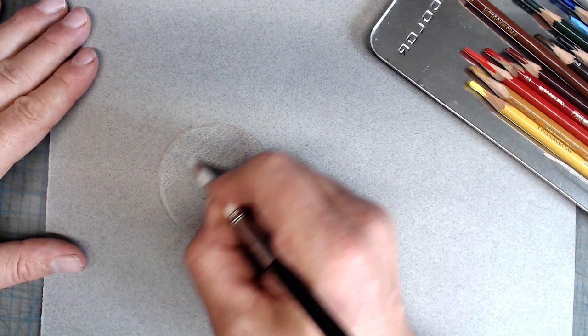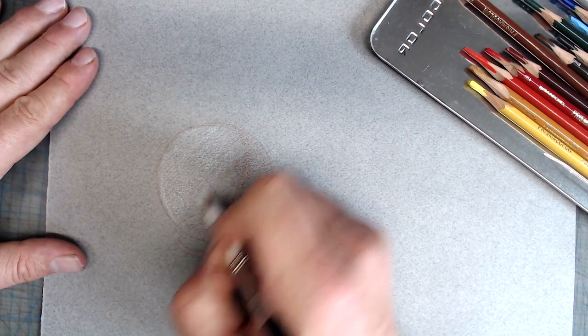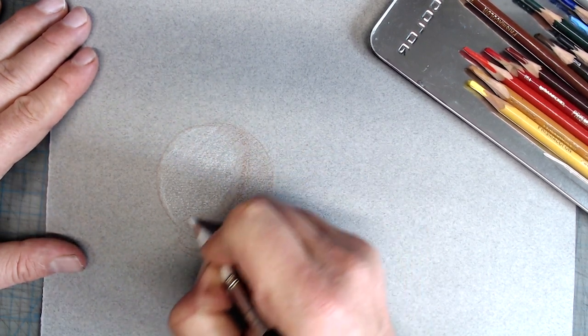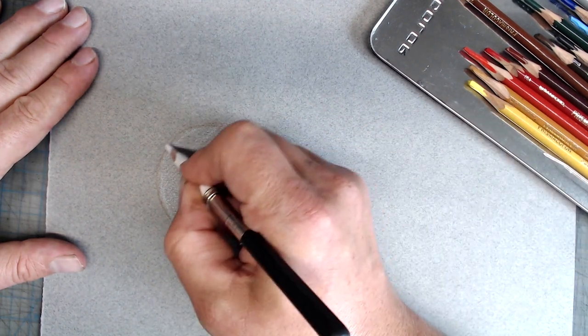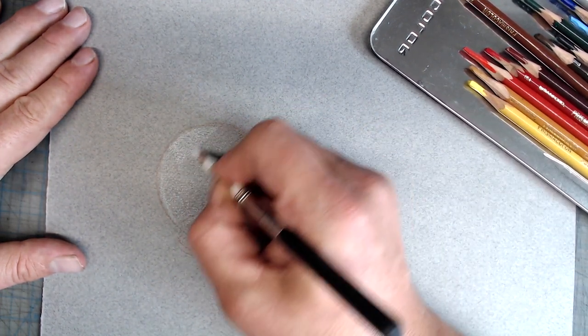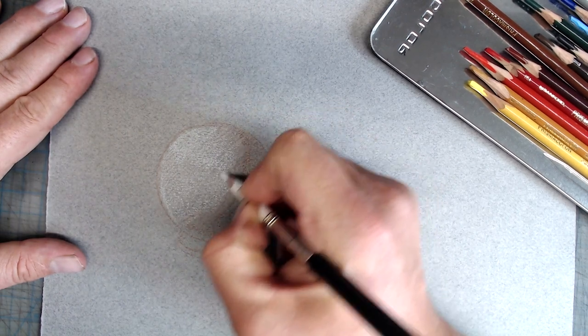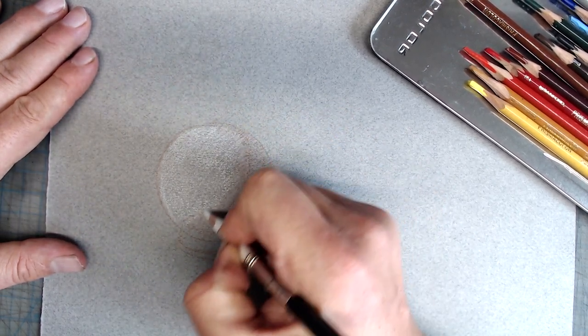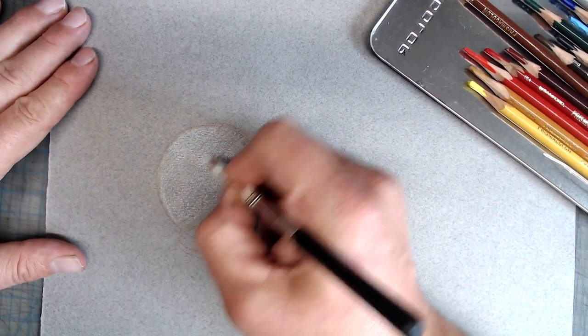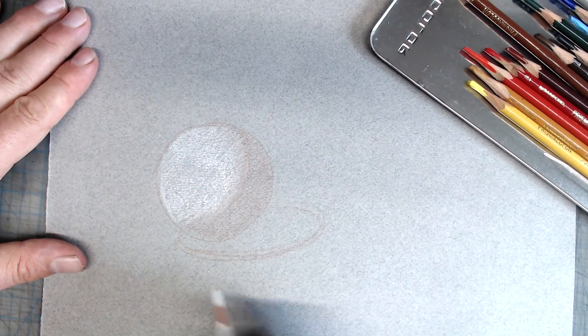The white pencil will serve two purposes in my drawing. It'll be used to lighten values, and it'll also be used to soften and blend. This means that, unlike standard colored pencil technique, where the white pencil is used quite infrequently, here it'll be used a lot. I recommend buying a few white pencils, since you'll go through them very quickly.